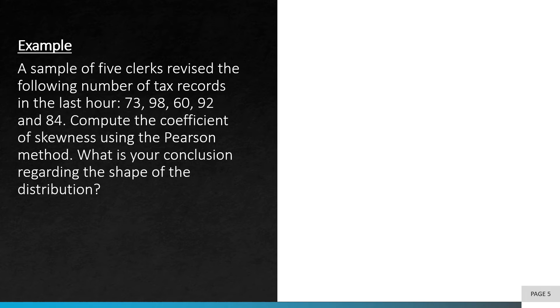Let's look at this example. A sample of five clerks revised the following number of tax records in the last hour: 73, 98, 60, 92, and 84. Compute the coefficient of skewness using the Pearson method. What is your conclusion regarding the shape of the distribution?